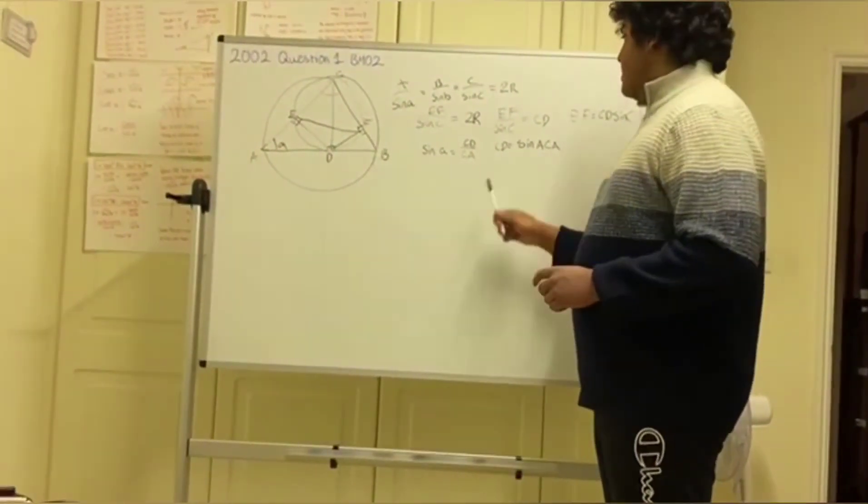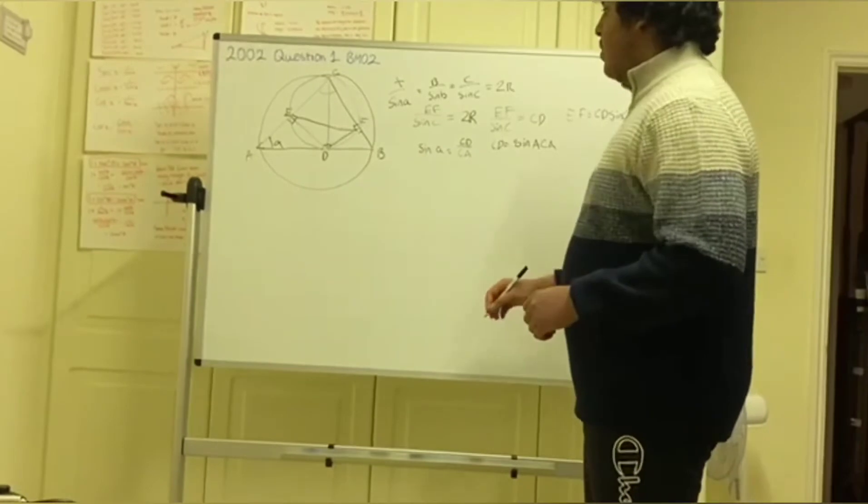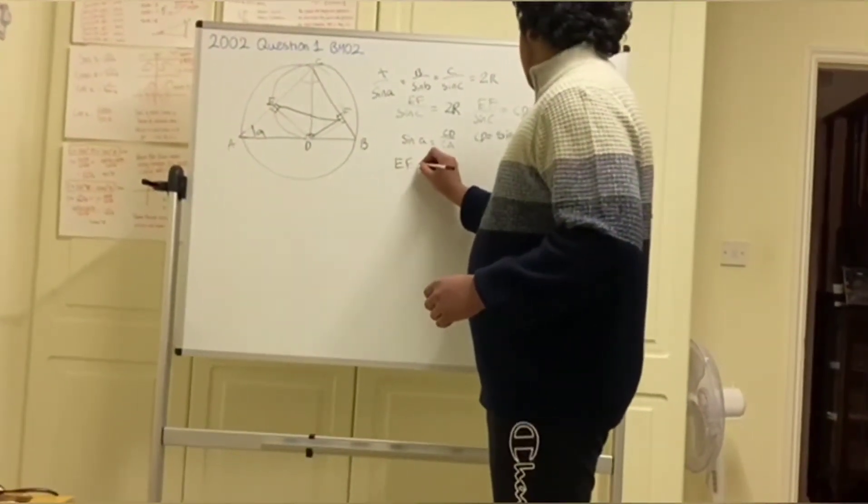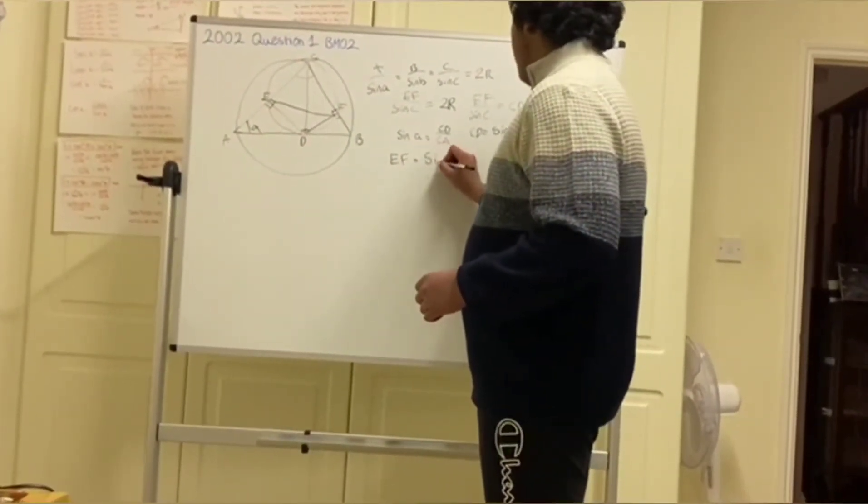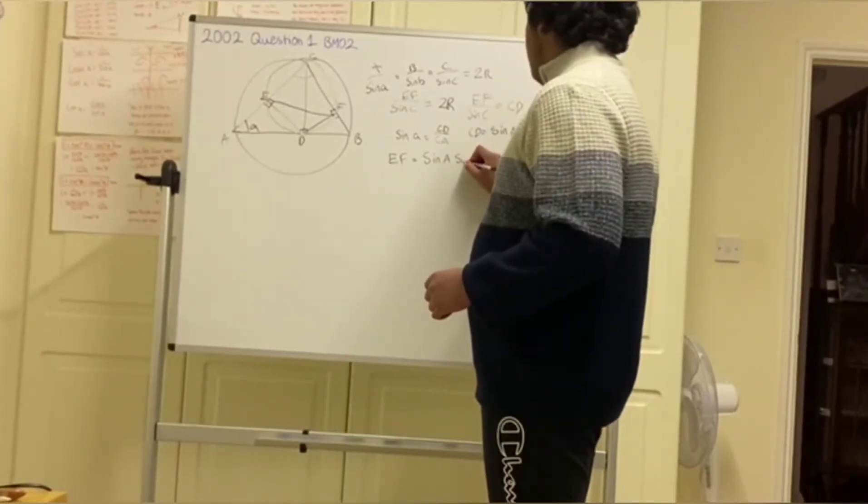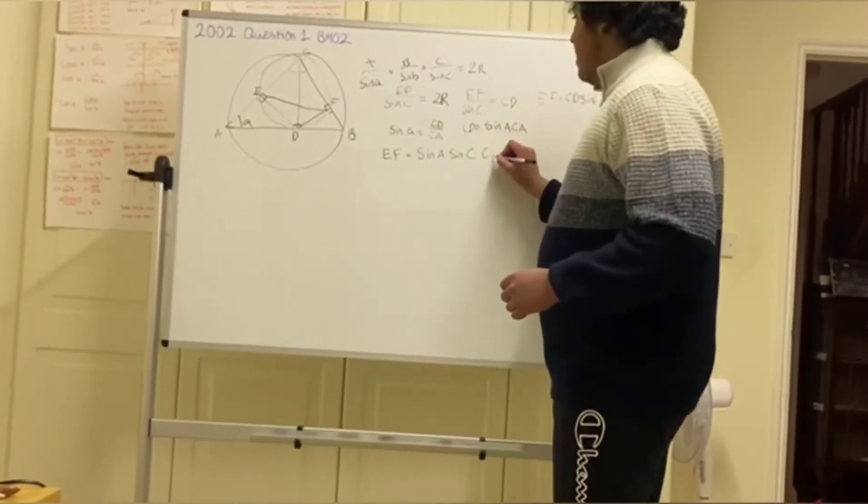So with this substitution, we can now put this into our original thing, get EF equals sin A, sin C, CA.